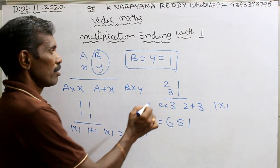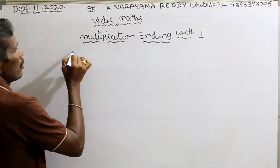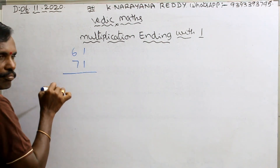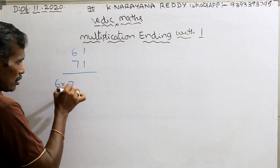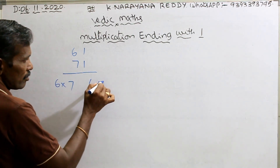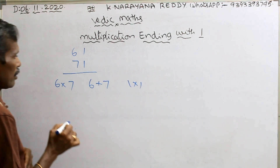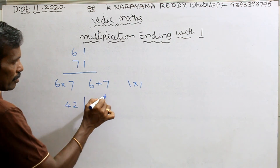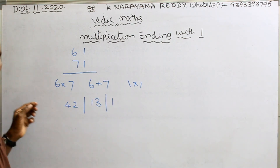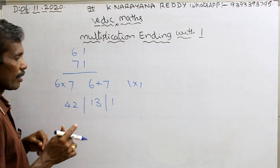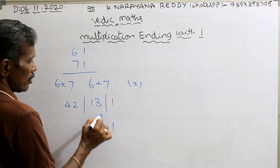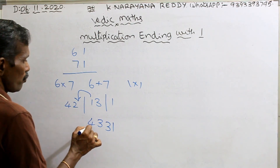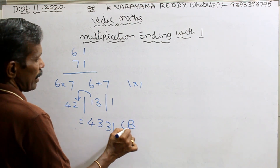61 into 71: first multiplication 6 into 7 is 42, next addition 6 plus 7 is 13, next 1 into 1. Balancing rule — see here: 1, then 3 becomes the next digit, 1 plus 2 is 3, 4. That is the balancing rule — answer is 4331.